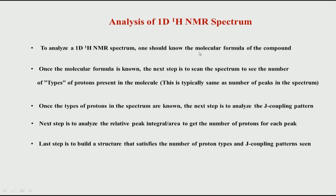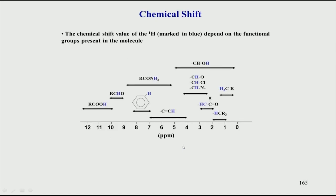When we take all of these together, we can get the total structure of the molecule based on which satisfies the number of proton types. If you know the molecular formula, you know the number of hydrogens, and that number should match in the final structure you predict from the spectrum. It is good to have knowledge of where the different chemical shifts come — this is a schematic diagram for a few functional groups. The different functional groups have very characteristic ranges of chemical shift and they always come in that particular range.